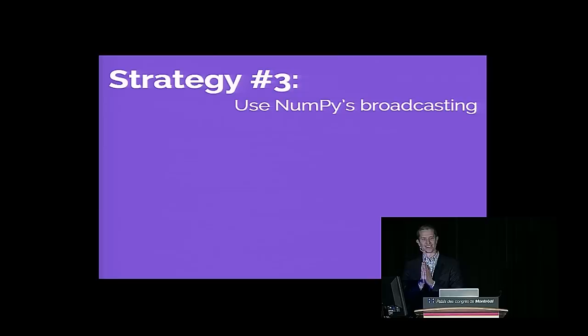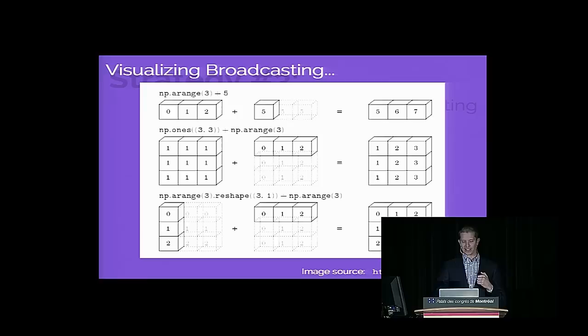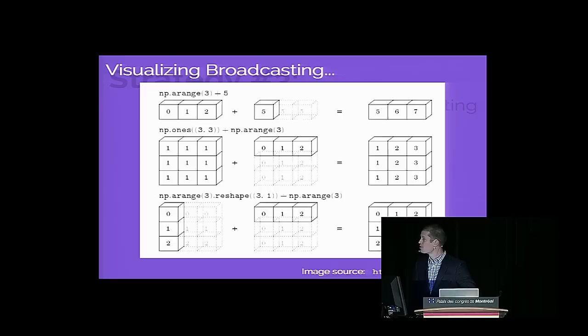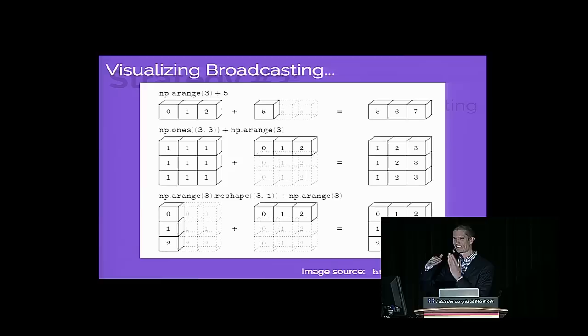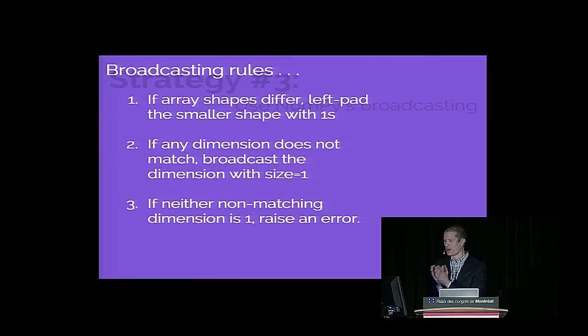The third strategy is broadcasting. What broadcasting does is give you a set of rules by which ufuncs operate on arrays of different sizes and dimensions. These rules allow you to add a scalar to a vector, add a row to a matrix so it adds to every row, or take a column vector and add it to a row vector to produce a two-dimensional array. Once you get these rules down, there's a huge amount of operations you can do really efficiently.